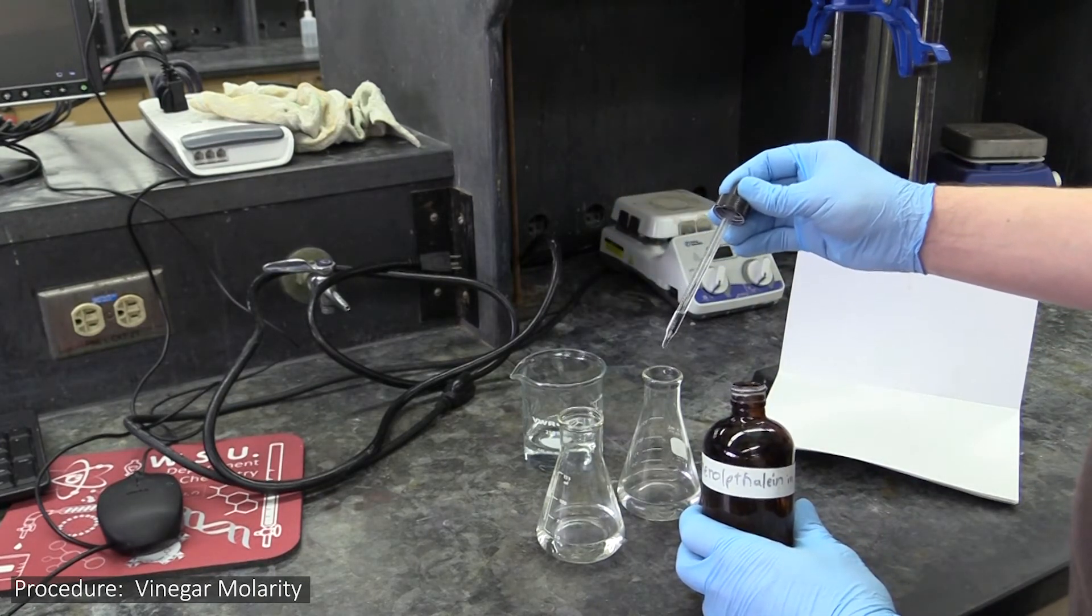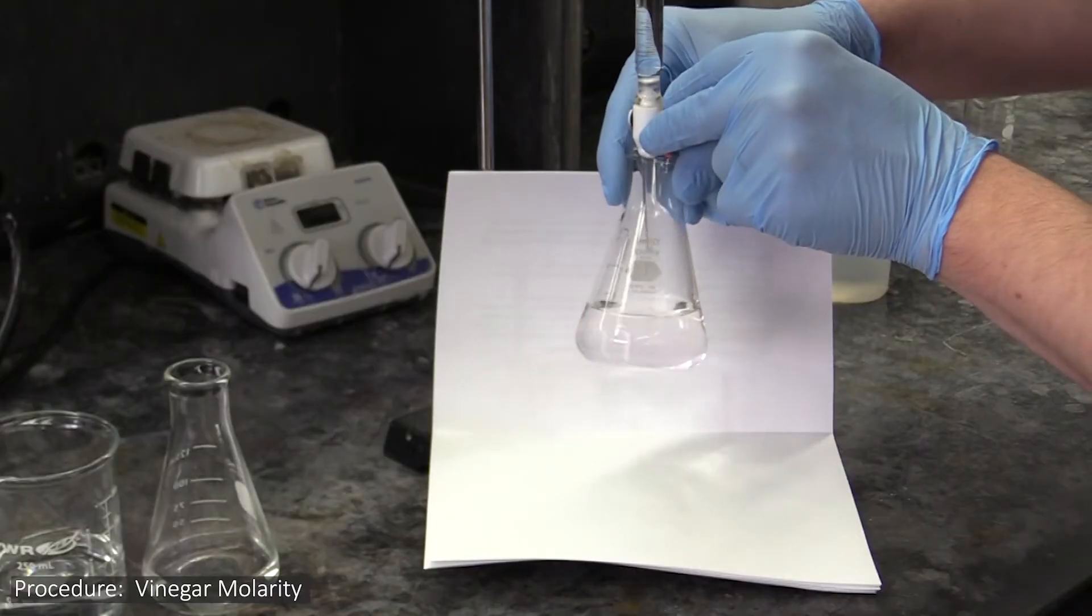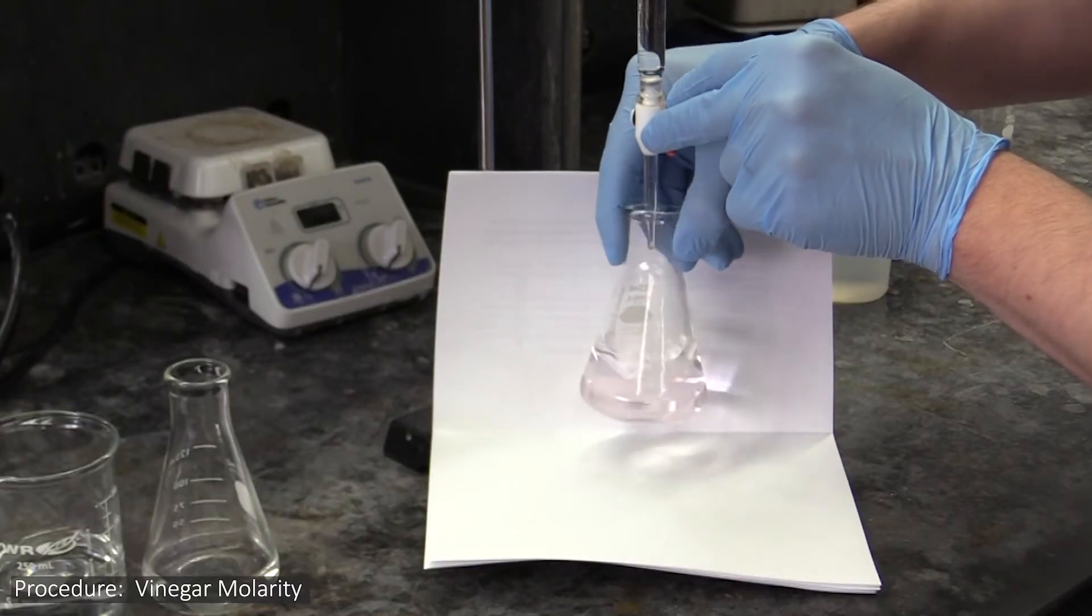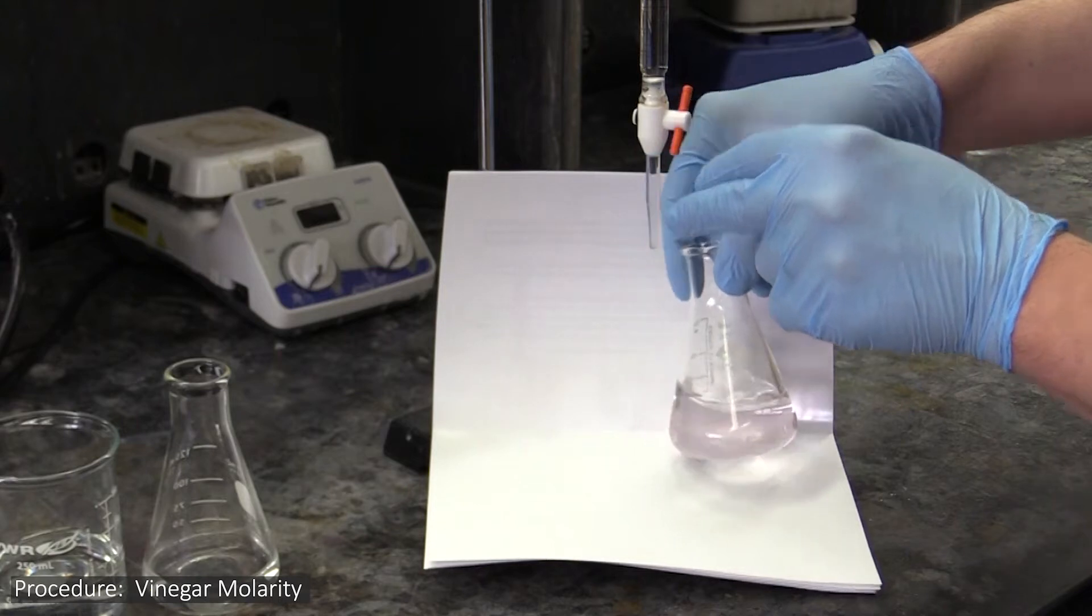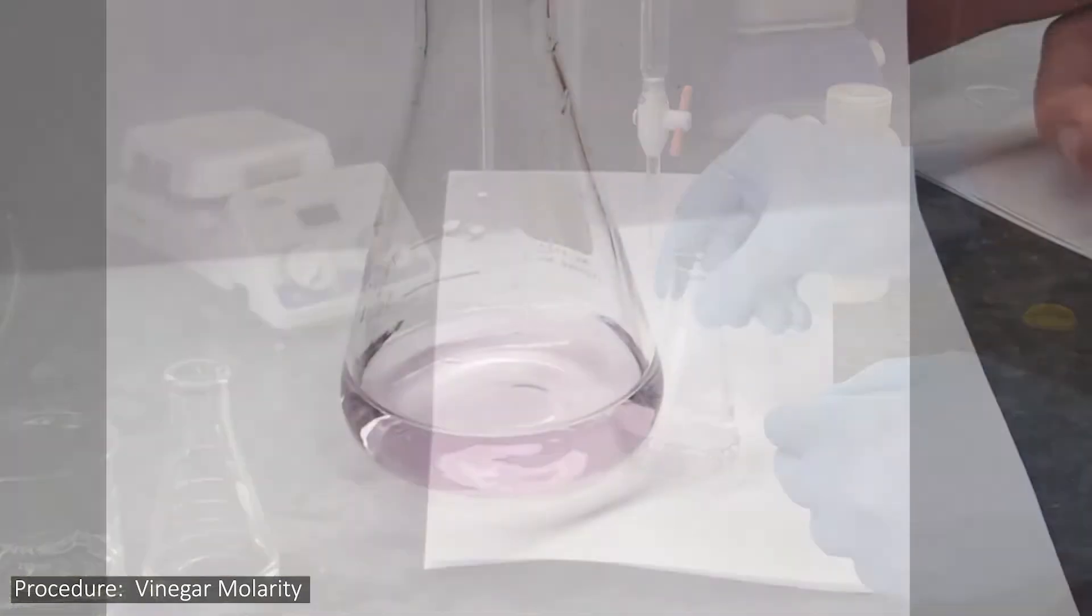This indicator will tell you when your titration is finished. As soon as you have added enough sodium hydroxide to react with all the acetic acid present, it will make the solution turn from clear to a pinkish-magenta color.